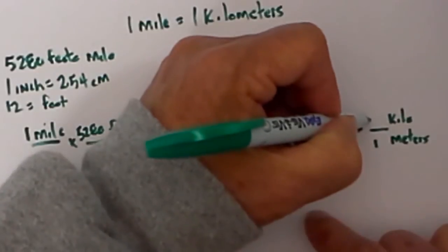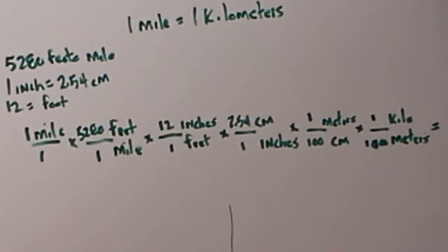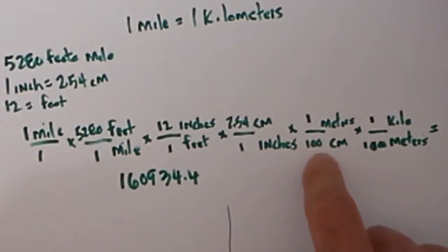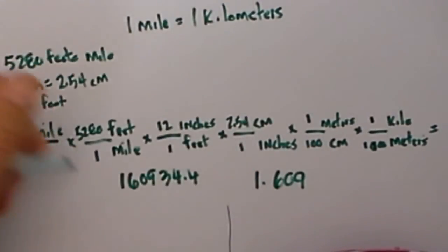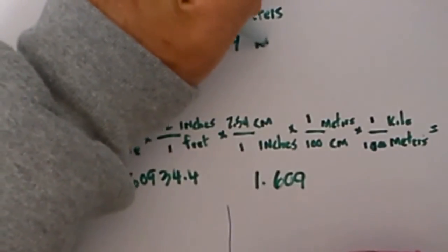So now all I do is multiply this across. So I will take 5280 times 12 times 2.54 and that equals 160934.4 and on the bottom we have 100 times 1,000 which is 100,000. So I will divide that by 100,000 and that gives me a grand total of 1.609 so 1 mile is equal to 1.609 kilometers.